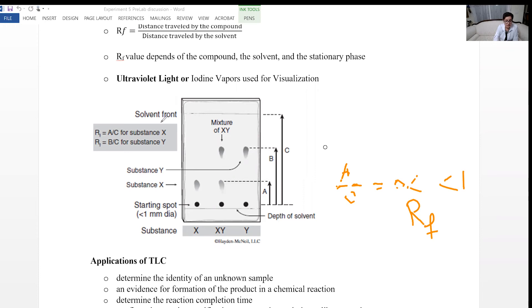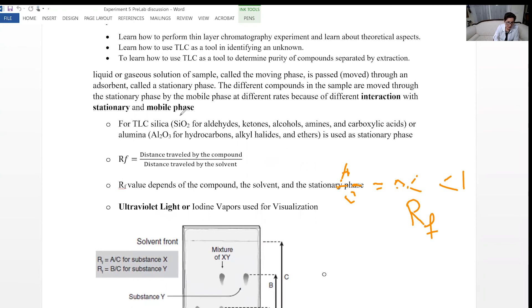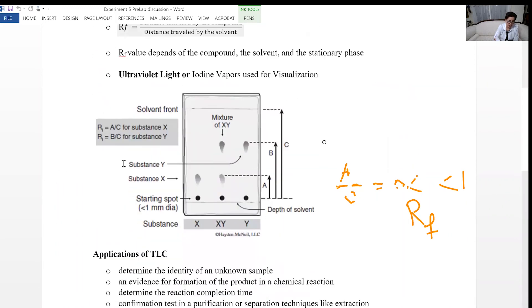Then you need to visualize it. In order to visualize, you can use UV light. You can use iodine vapor. Or if it gives you color compound, then you can just visual it directly without any UV light. And after you trace the spots and measure the distance, you can calculate the RF value for known samples and for the unknown. And compare the two in order to identify your unknown sample.